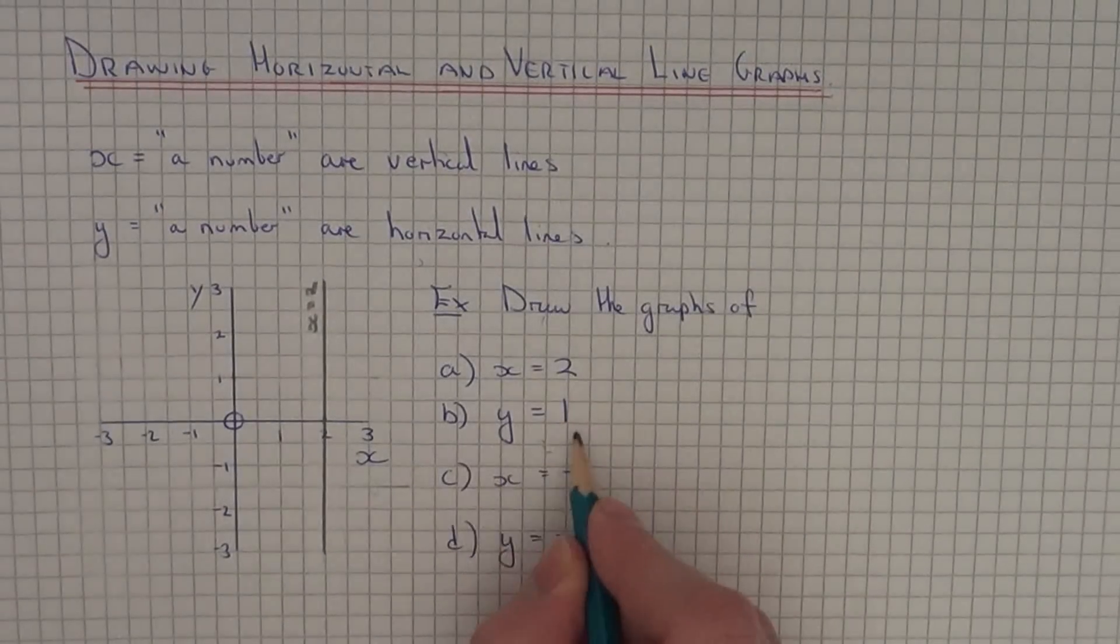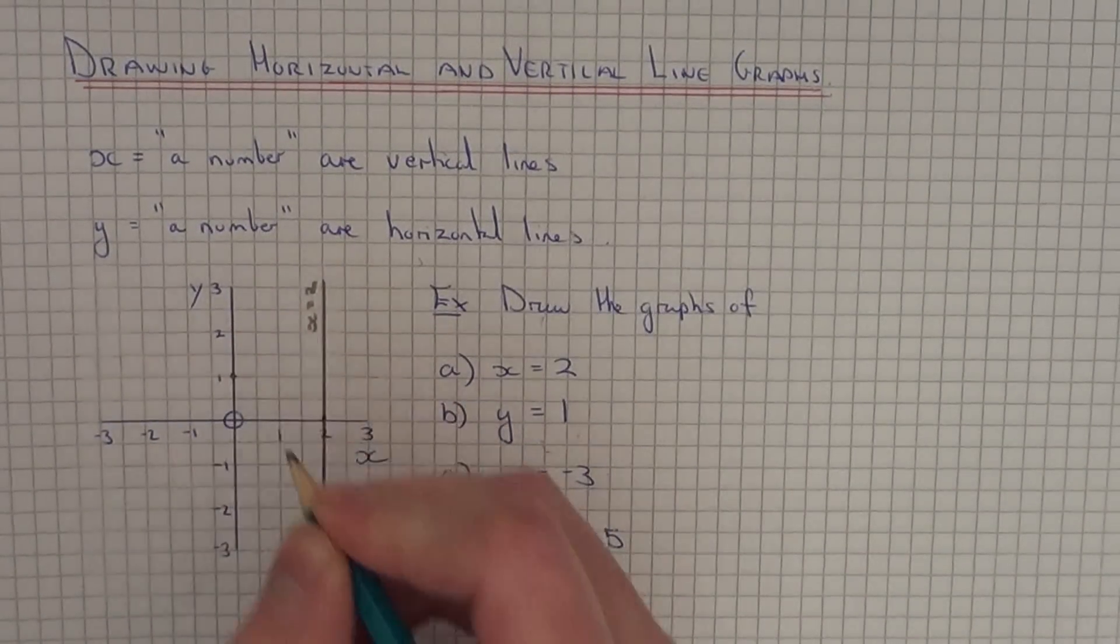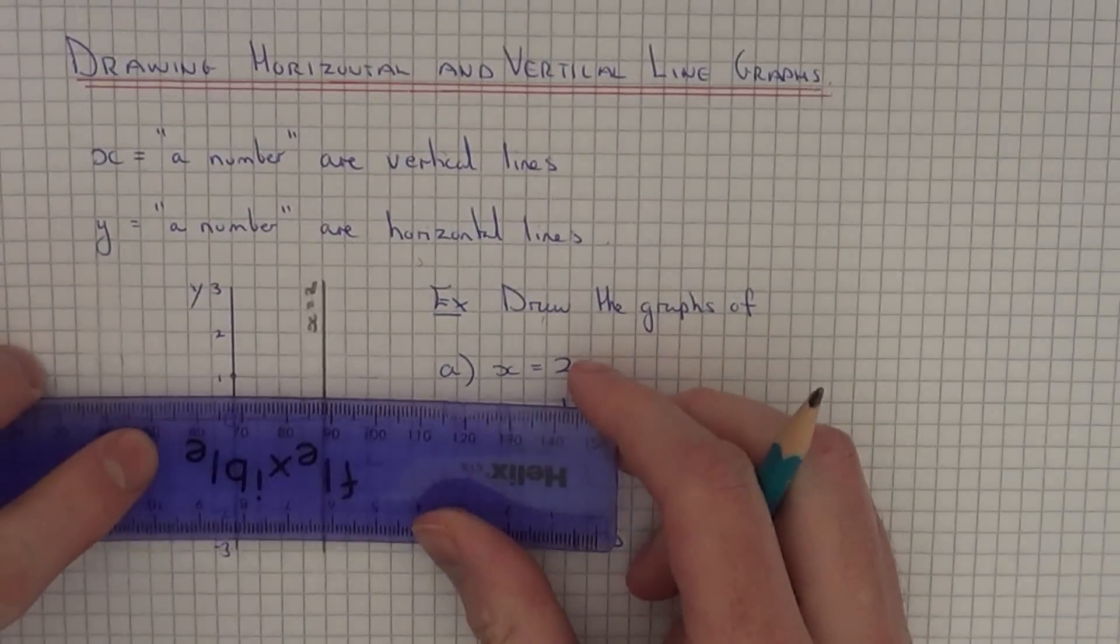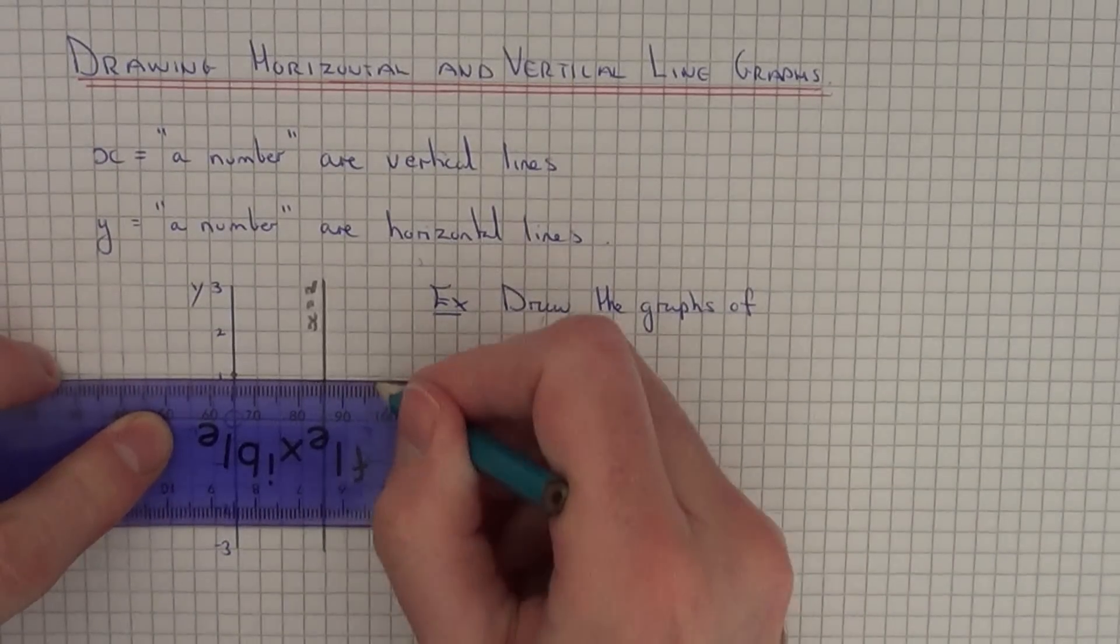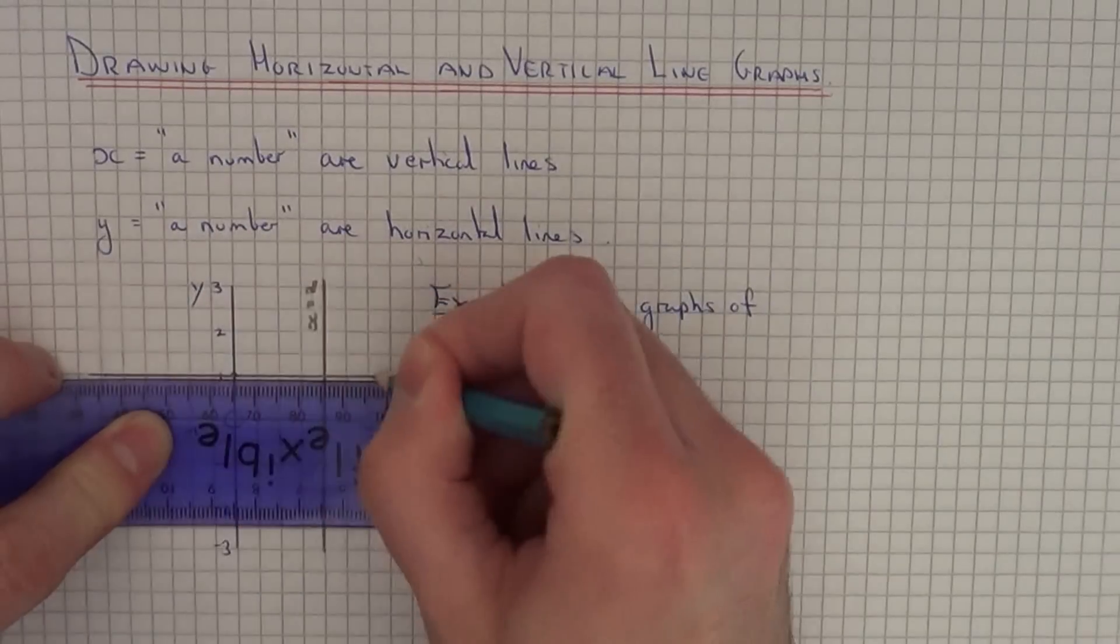So our next line to plot is y equals 1, so look for 1 on the y-axis which is here. So this time it's going to be a horizontal line, so again it will cross over the y-axis at 1.